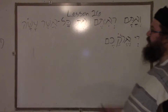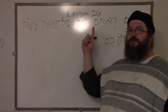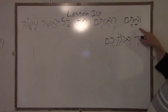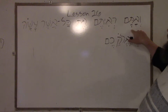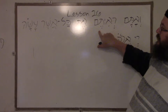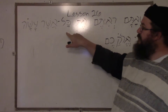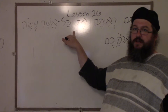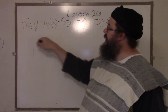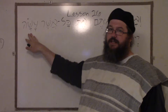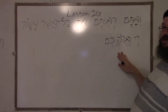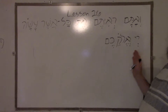Welcome back. Now we're going to be in lesson number 26. Va'atem — and you — ra'item — saw — et, which is the direct object, kol asher asa, all that he did, Adonai Eloheichem, the Lord your God.